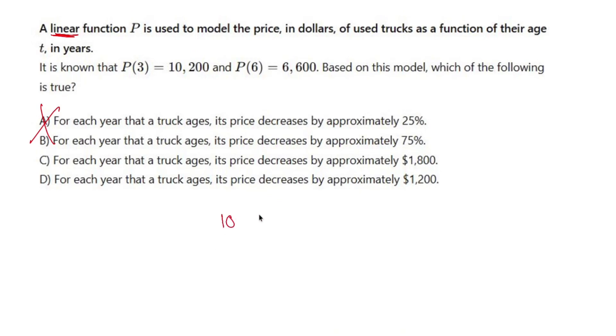If it starts at year 3, if it starts at 10,200 and now it's 6,600, right? And that was from year 3 to year 6, so we'll do 6 minus 3. We could use the average rate of change to see what this is going to be. So 10,200 minus 6,600 is going to be 3,600.